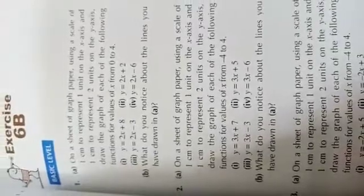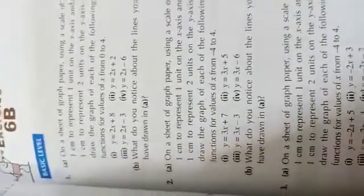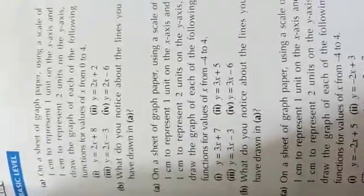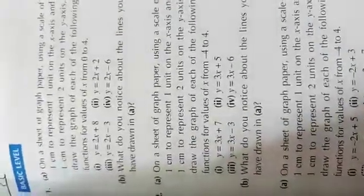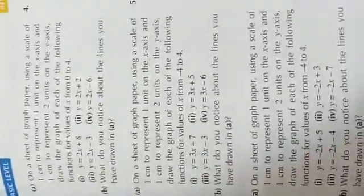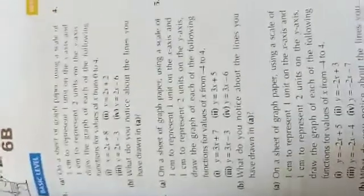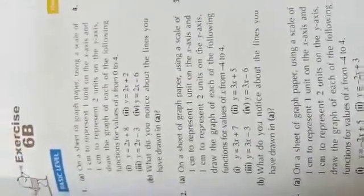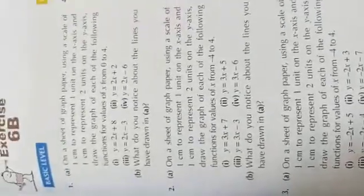The question says: draw the graph of each of the following functions for the values of x from zero to four. From zero to four, you can take in sequence on the positive side: zero, one, two, three, four. Or you can take multiples of two: put x value as zero first, then two, then directly four.